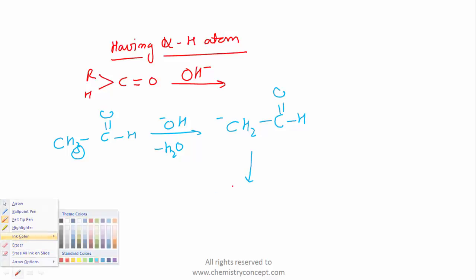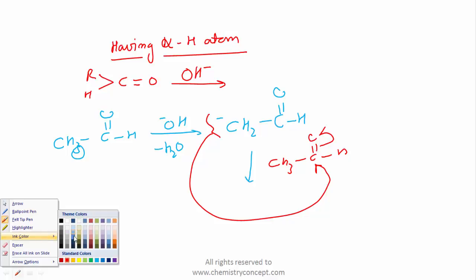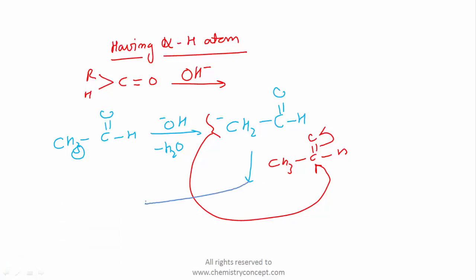The reaction takes place like this, and the product which we obtain is first CH3 C O negative H, and then the second part which is added here would be CH2 CH2 CHO.